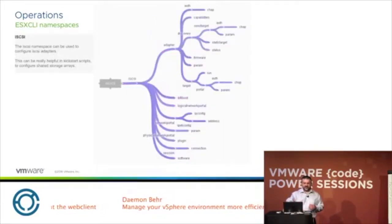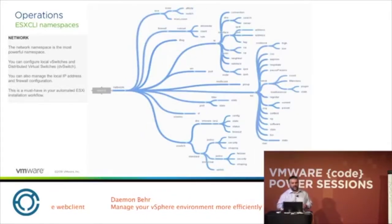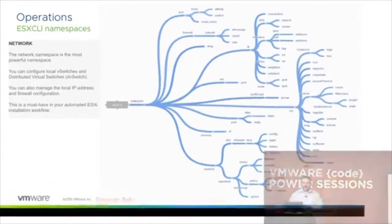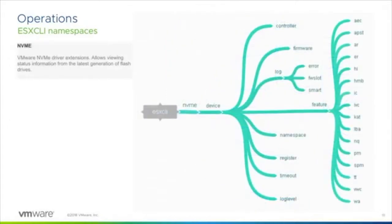The iSCSI namespace has a lot of parameters available to it. The network namespace has an incredible amount of things you can do on the network side — it's really quite vast and very powerful. There's also the NVMe namespace, so if you want to get information about the latest generation of flash drives you can do a lot of functions with that — it gives you a lot of power.